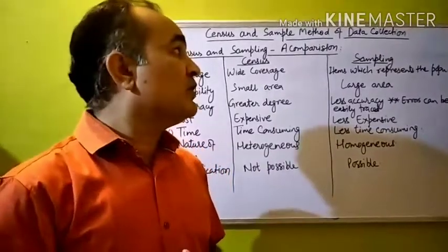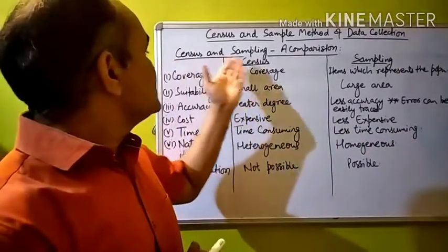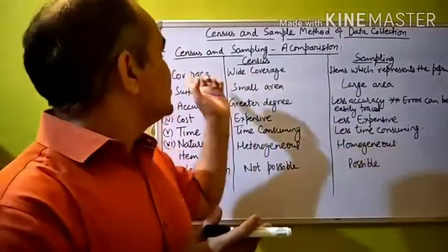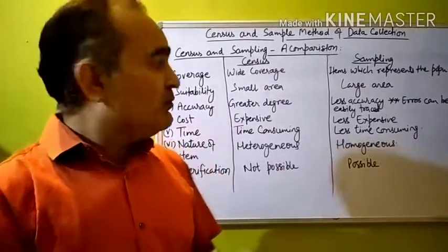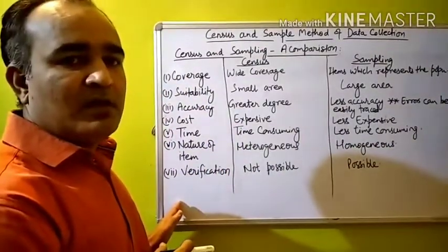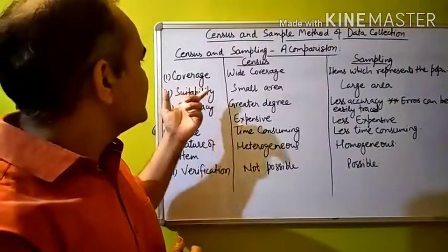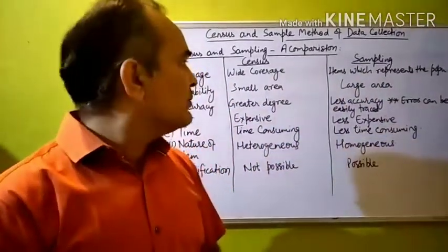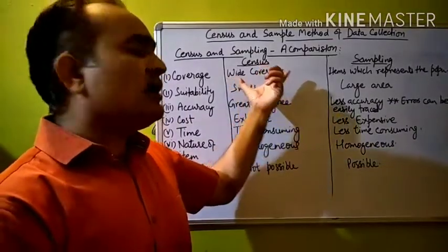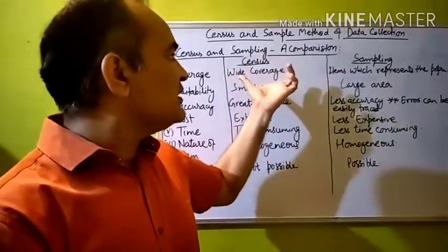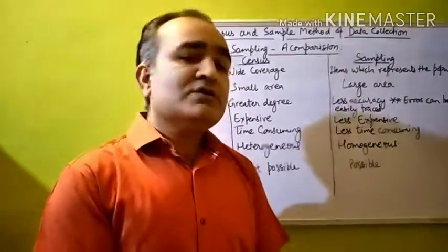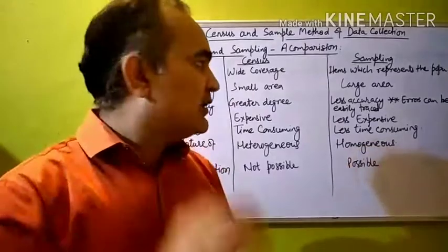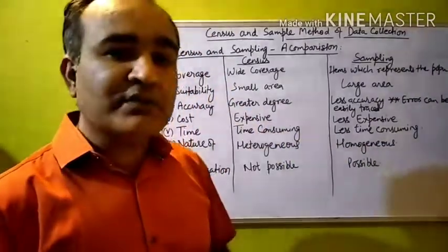So the reliability of sampling data depends on the size of sample, method of sampling, biasness of correspondent and enumerator, and training of the enumerator. Now the last topic of this chapter is census and sampling — a comparison. We will see the comparison between census and sample method of data collection based on certain criteria. The first criteria is coverage: in census method we get wide coverage, while in sampling method only the population covered as a sample is included.